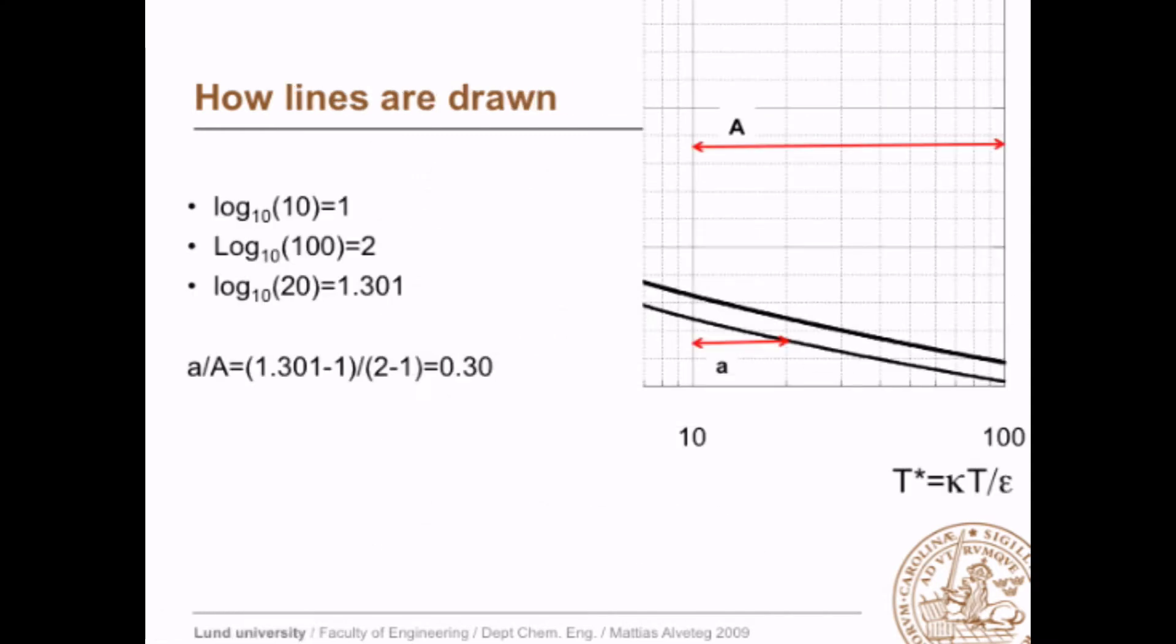So let's take a closer look at how the lines are drawn in the logarithmic diagram. If you take the distance here between 10 and 20 and compare that with the distance between 10 and 100, then that relates to the logarithms of 10, 100, and 20.